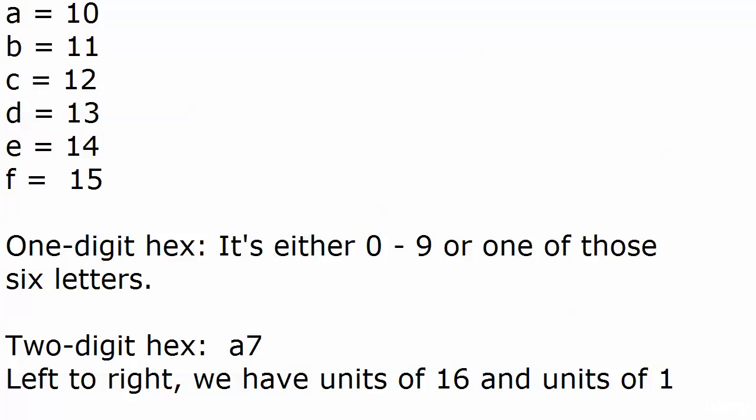So let's see what we have there. We have A units of 16, which means 10. So we have 10 units of 16. Right there we know the A represents 160 in decimal. The 7 represents 7 units of 1. So that's 160 plus 7, and that is 167.